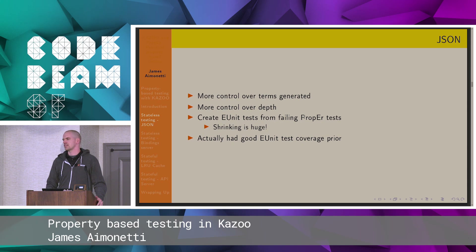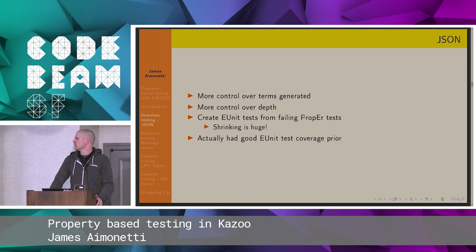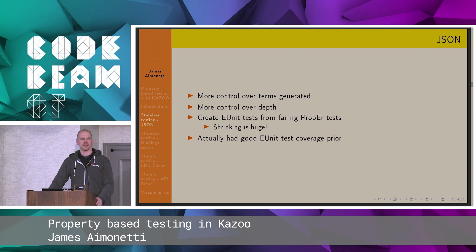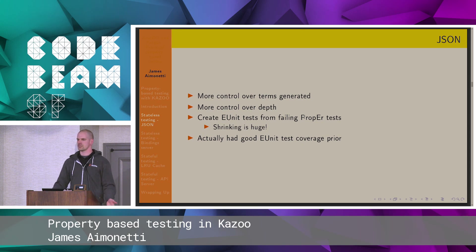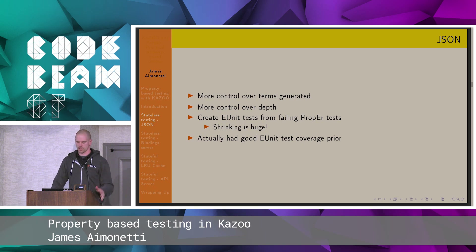Most of the things it found were like empty binaries as keys and weird things like that. The main thing it made us do was tighten our types for Dialyzer on what we considered a JSON object, a JSON string, and things like that — and that's helped us identify issues with our Dialyzing.